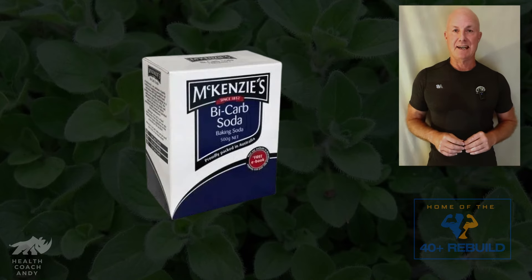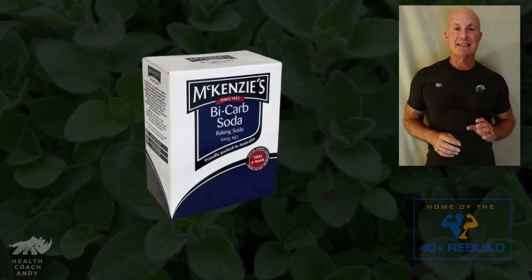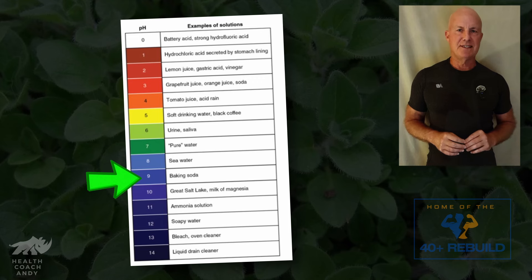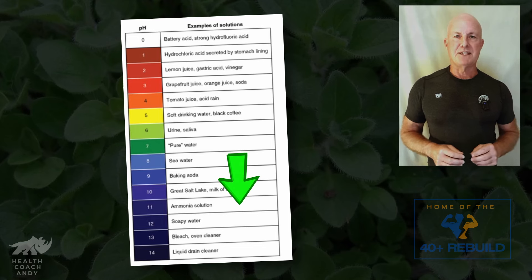A quick word on bicarb: bicarb does not whiten teeth, so don't pay extra money for a toothpaste that proudly announces it contains bicarb. But it does clean very well. I use bicarb mostly because it's a strong alkaline and will raise the pH of your mouth — in other words, it reduces the acidity that bacteria thrive in. Many holistic dentists promote brushing or gargling with bicarb before bed because it can make the whole mouth less acidic overnight, hence reducing tooth decay that way.